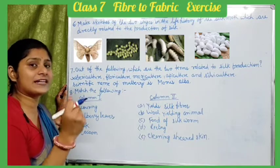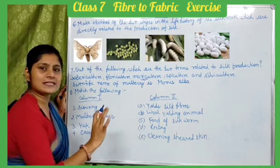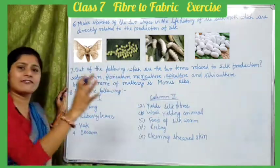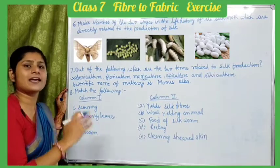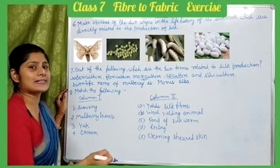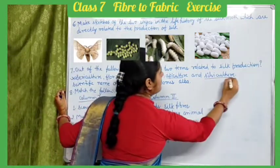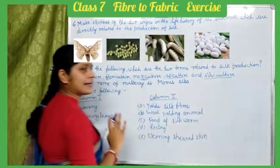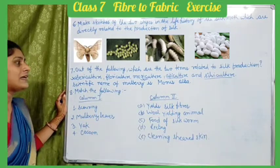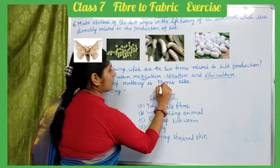Apiculture is related to honey cultivation, so it is not related to silk production. Silviculture refers to the process when forests are cut and new plants and trees are grown — it is also not related to silk production. The scientific name of mulberry is Morus alba.